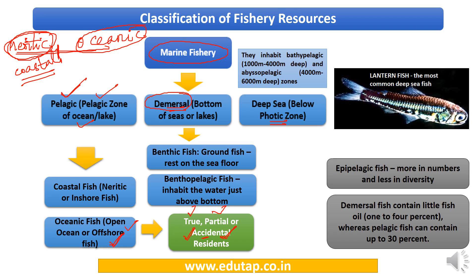Demersal fish are classified into two types: benthic fish, which rest on the sea floor and are called ground fish — their weight allows them to rest at the bottom without effort — and benthopelagic fish, which inhabit the water just above the bottom and can swim or maintain balance there.